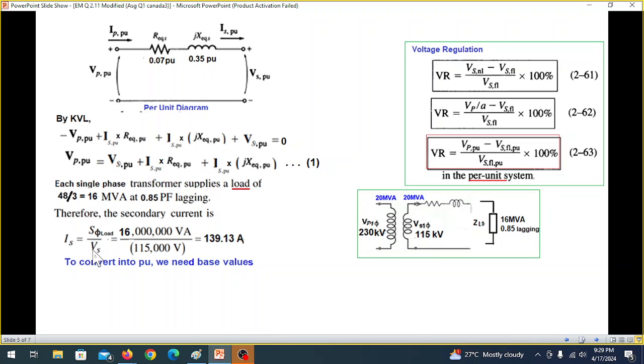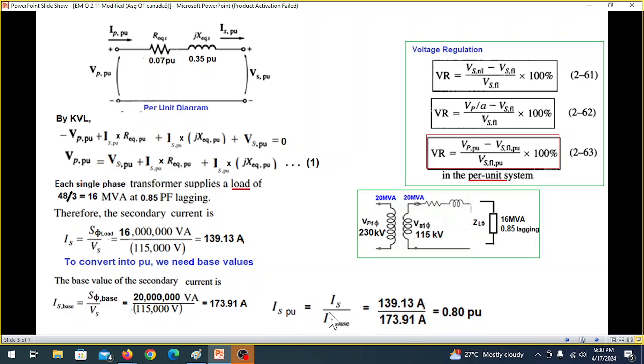Now, for base current, formula remains same, except that we are now calculating here. Therefore, S load will not be 16 MVA, rather it will be the rated MVA, 20 MVA. So the base value of the secondary current is S phi base over VS, so it is 20 MVA from here, divided by the same voltage, so it is 173.91 Ampere. Now that we have got the base current and the actual current, we can find the PU value. So ISN per unit is IS actual divided by base, from here, 139.13 over base, that is 0.80 per unit.